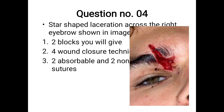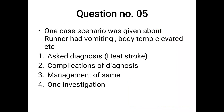The next question asked for four wound closure techniques: first, stapler; second, suturing; third, biological glue; fourth, approximation by Steri-Strip. Then the question asked to mention two absorbable and non-absorbable sutures. Absorbable: catgut plain, chromic catgut, Vicryl, Monocryl. Non-absorbable: silk, polyethylene, nylon, polypropylene.